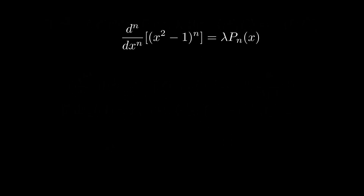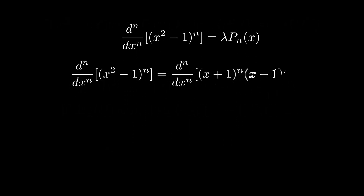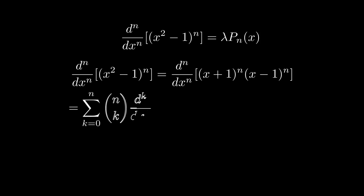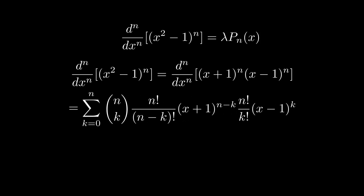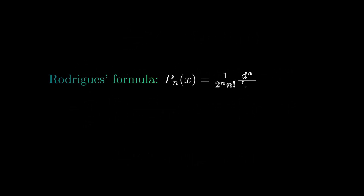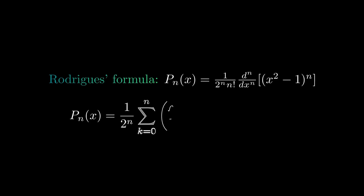To determine lambda, we just have to look at the value of the polynomial at 1. With the generalized Leibniz rule, we get the expression as a sum. At x equal to 1, every term is equal to 0 except one, and we get that the value at 1 is 2 to the nth power times n factorial. Thus, we get this explicit formula for the nth Legendre polynomial — this is called the Rodrigues formula. With the Leibniz rule, we also get another explicit formula.